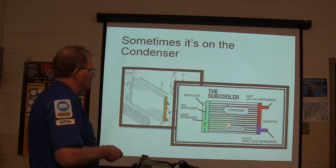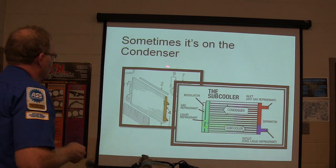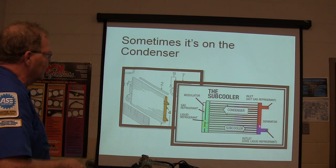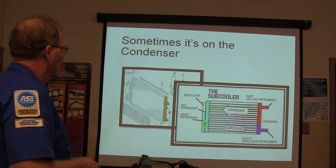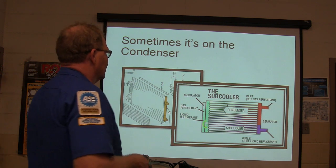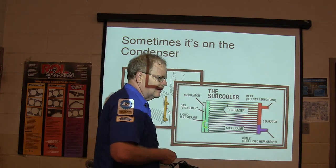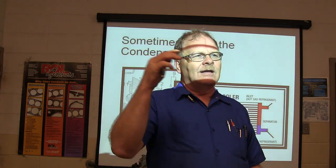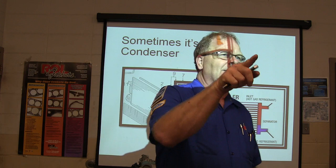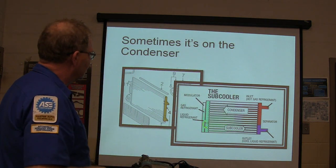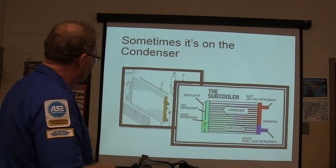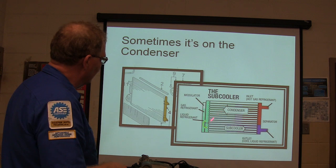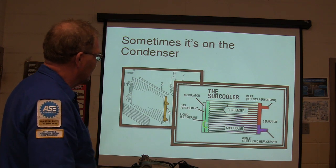The subcooler is a peculiar thing — I drew this myself in Microsoft Paint. Sometimes it's on the condenser. On these subcoolers, which a lot of vehicles have now, you're not only condensing the refrigerant back into a liquid, you're also cooling it. So it's cooled liquid when it goes back into the evaporator, which makes it much more efficient. The condenser is the upper part and the subcooler is the bottom part.